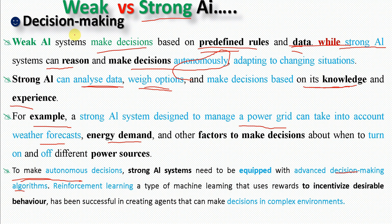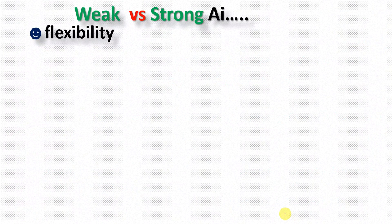Reinforcement learning is a type of machine learning that has been successfully used in creating agents that make decisions autonomously.